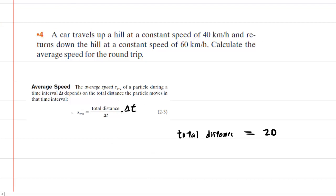So we'll multiply both sides by delta t so that the delta t's cancel out on the right-hand side, and then we can divide both sides of the equation by average speed. So the average speeds cancel on the left side. Now we have a time interval equaling total distance divided by average speed.